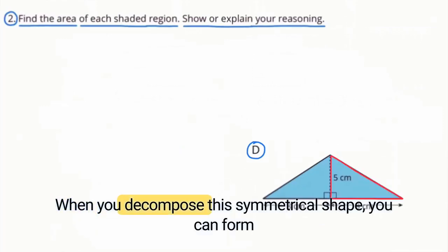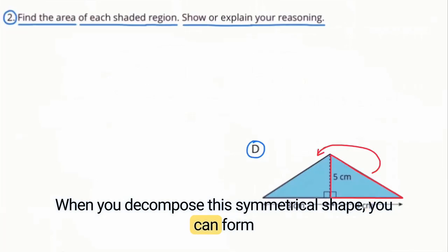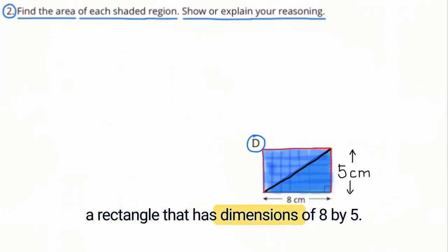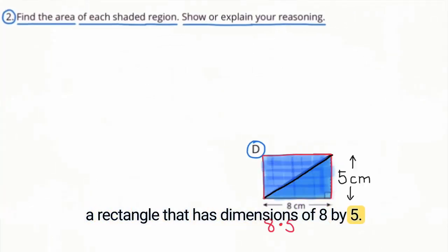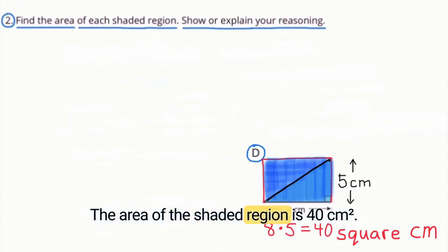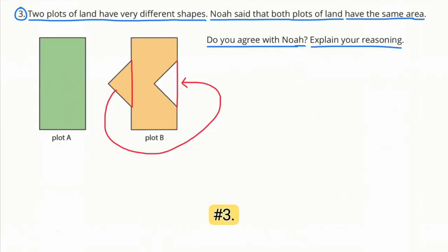D. When you decompose this symmetrical shape, you can form a rectangle that has dimensions of 8 by 5. The area of the shaded region is 40 square centimeters.